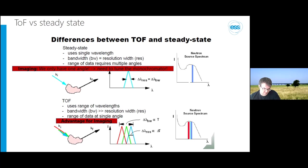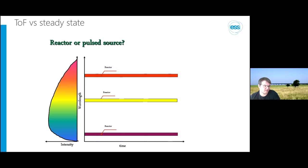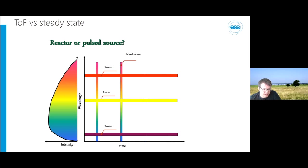With time-of-flight you can get the different wavelength bands — red, baby blue, dark blue — all in the same shot. At a reactor you pick part of the spectrum; you can use a full white beam, or pick a single wavelength. At a time-of-flight source you're using the full spectrum basically in every shot, and it comes in a pulsed way.